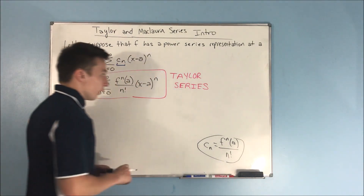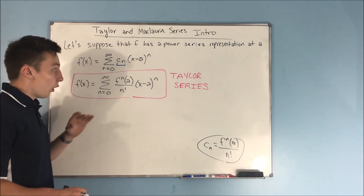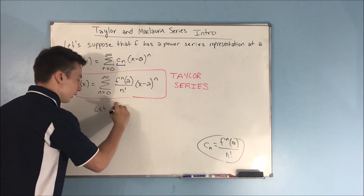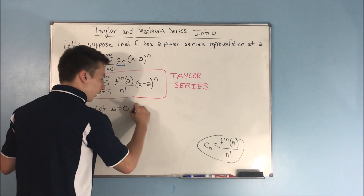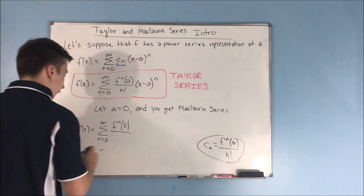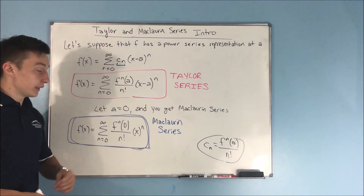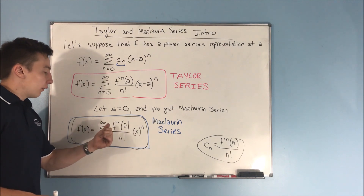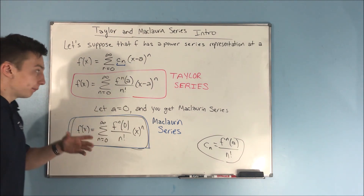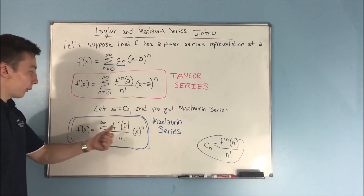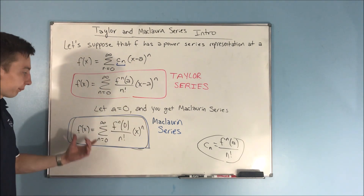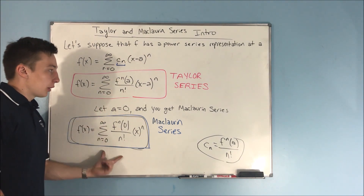Now here's how we get the Maclaurin series. All we have to do is let a equal 0, and that gives you the Maclaurin series: the sum from n equals 0 to infinity of the nth derivative of f at 0, over n factorial, times x to the nth power. We just plugged in a equals 0, so the nth derivative is evaluated at 0, and x minus 0 is just x to the n. So there you have your Taylor series and your Maclaurin series.